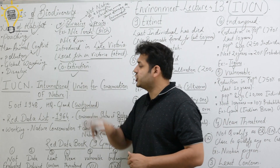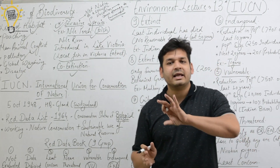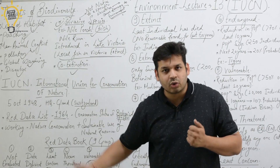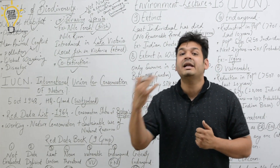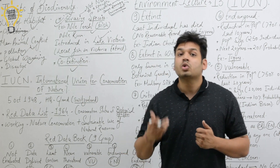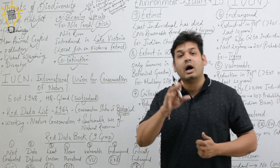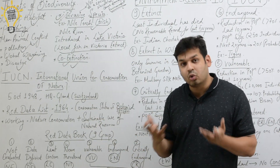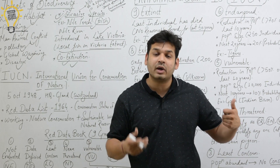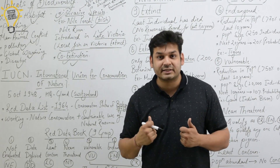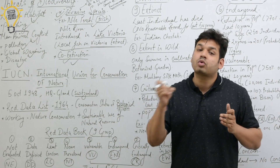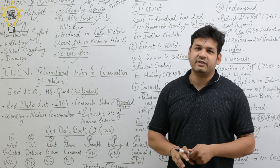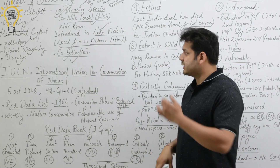Next is co-extinction. Co-extinction means: you know there is a food chain where every animal is dependent on another. If any animal in the middle is eliminated — for example — what happens? The other animals are harmed. So co-extinction means that if any animal in the food chain is eliminated, the species that depend on it are also harmed, because they survive by feeding on that animal. This is also a threat to biodiversity — it is called co-extinction.